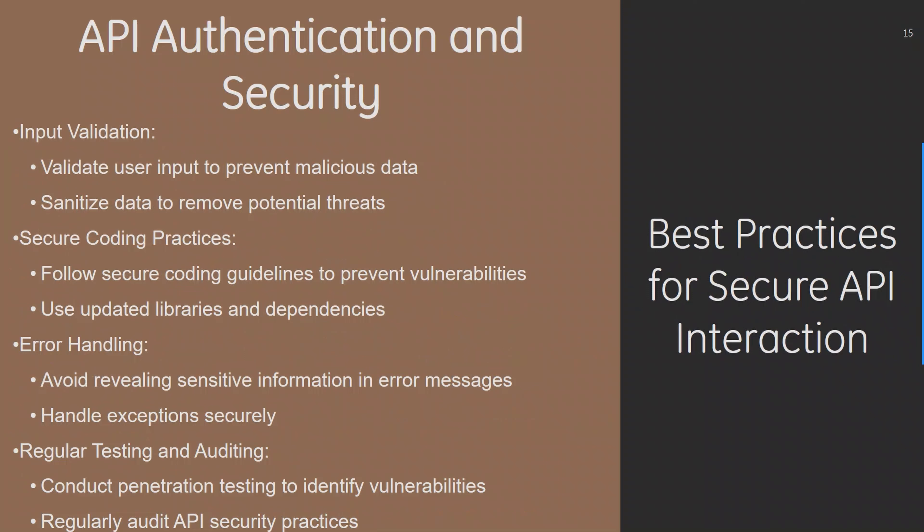Best practices for secure API interaction include input validation to prevent malicious data and sanitize data to remove potential threats. Secure coding practices mean following secure coding guidelines to prevent vulnerabilities and using updated libraries and dependencies. Error handling means avoiding revealing sensitive information in error messages and handling exceptions securely. Regular testing and auditing involves conducting penetration testing to identify vulnerabilities and regularly auditing API security practices.